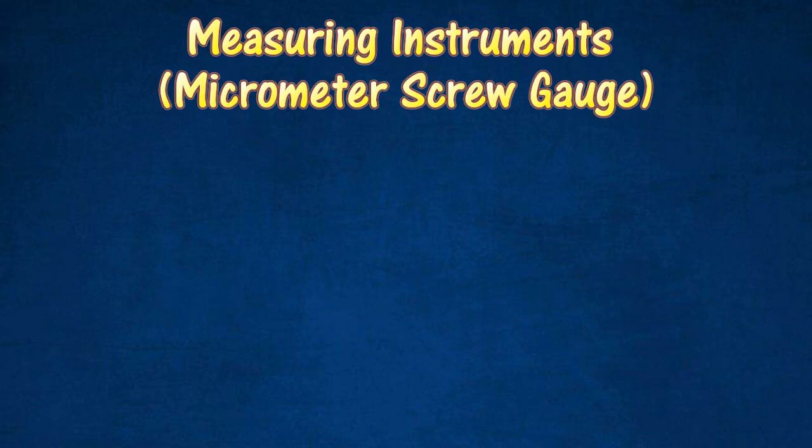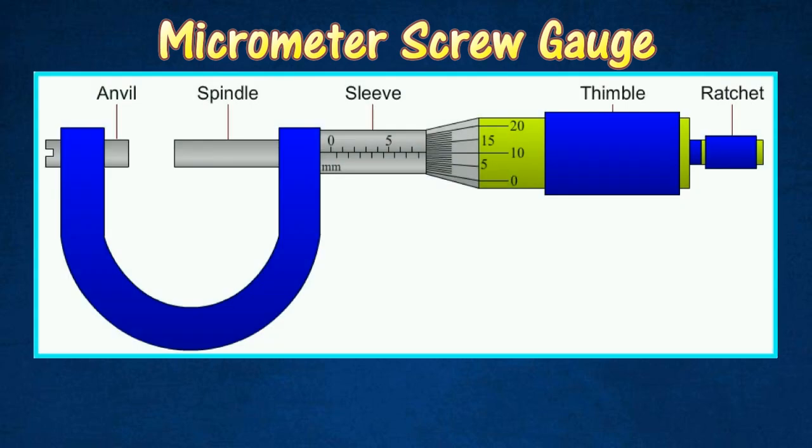Measuring Instruments: Micrometer Screw Gauge. Micrometer screw gauge can be used to measure very small lengths, as it can measure length accurately up to 0.01 mm.